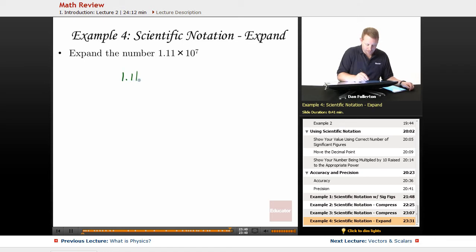So 1, 2, 3, 4, 5, 6, 7. So I would write that as 11,100,000. 11,100,000.